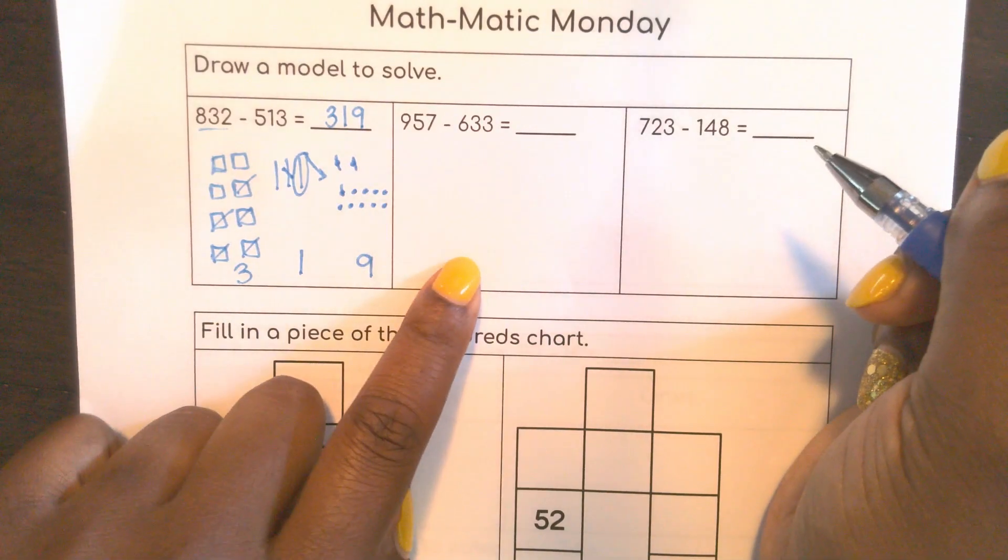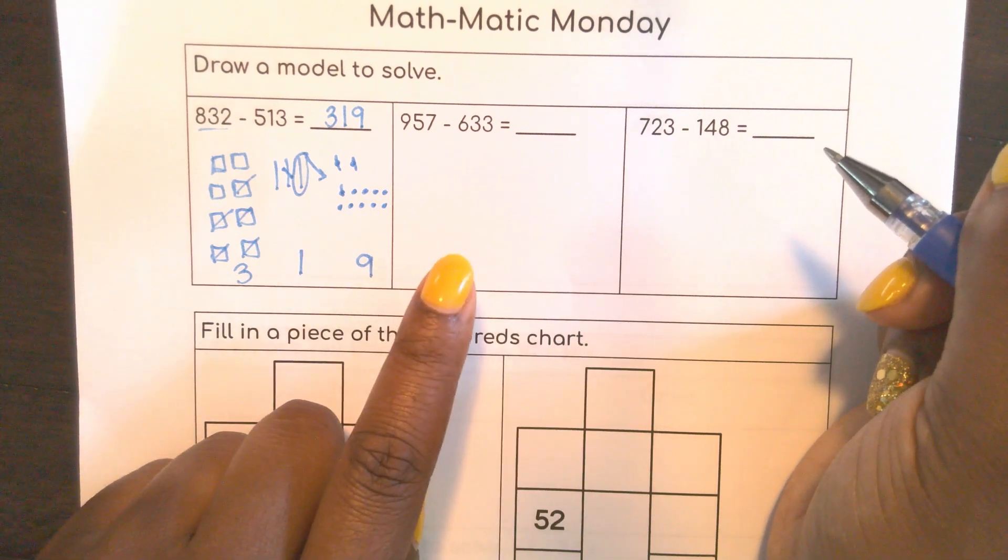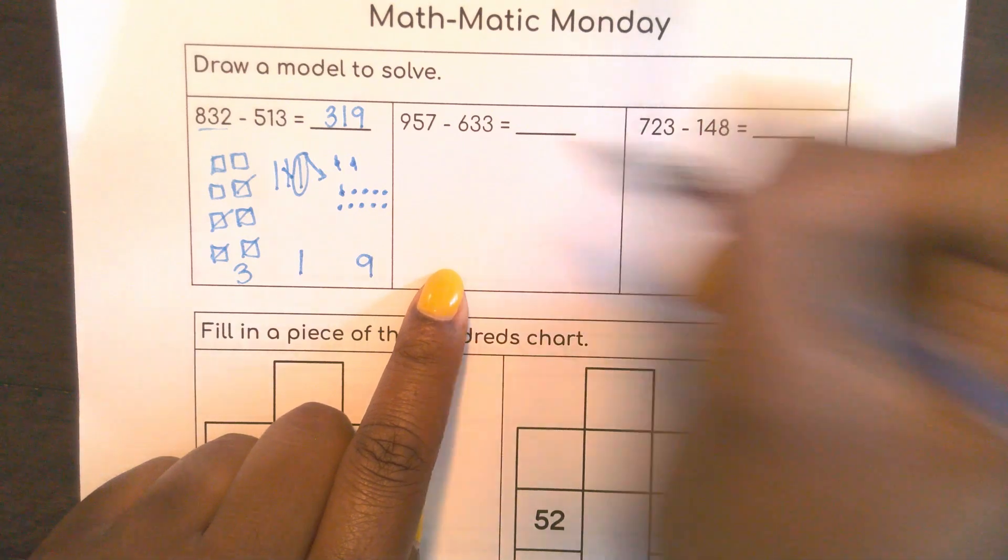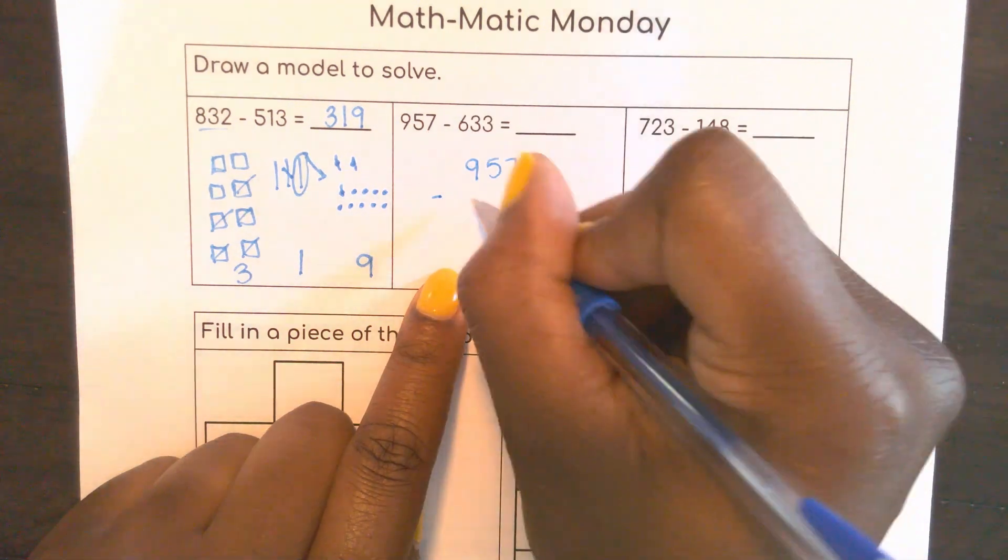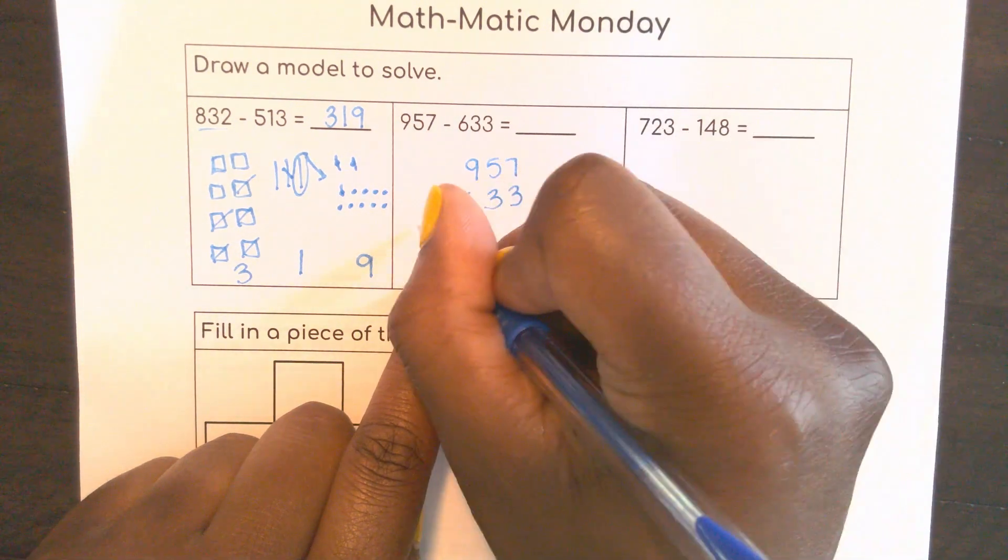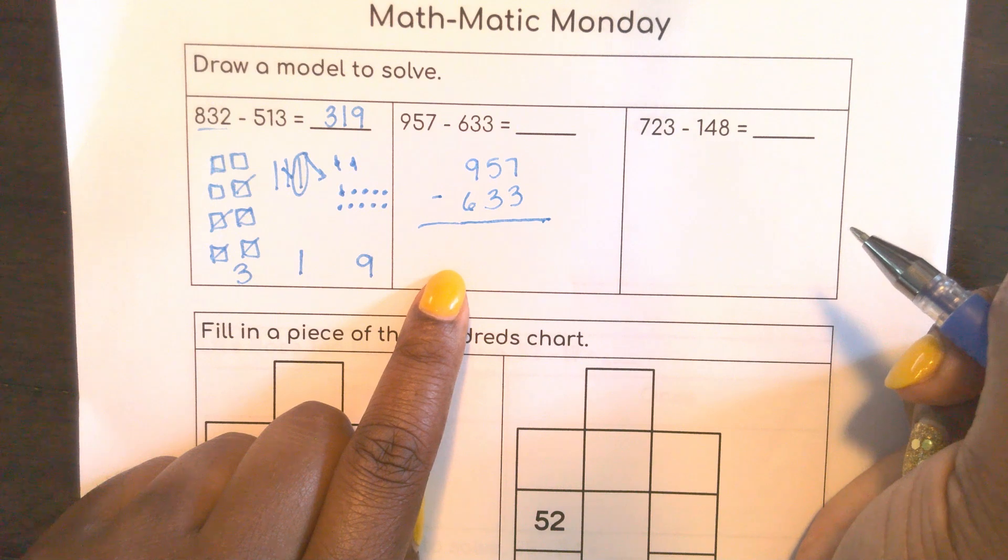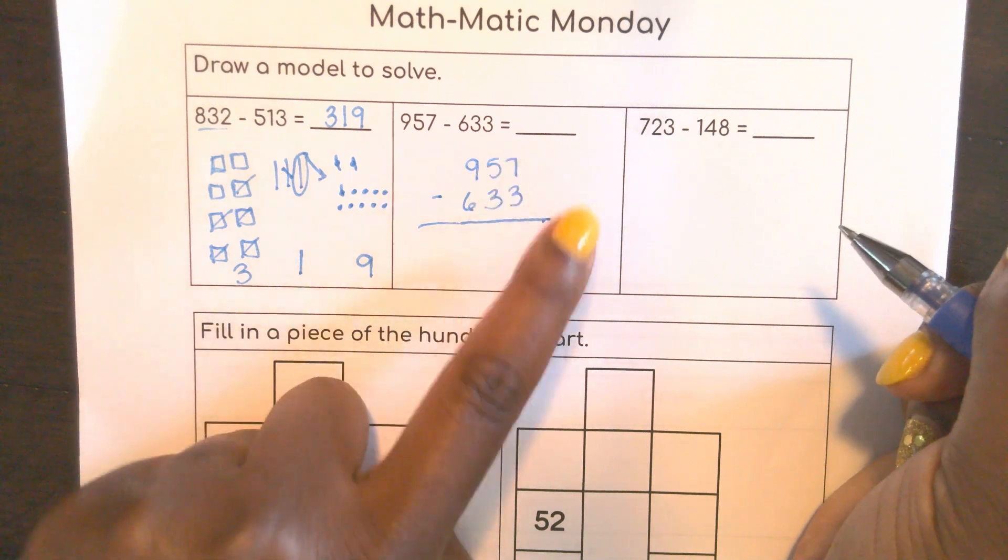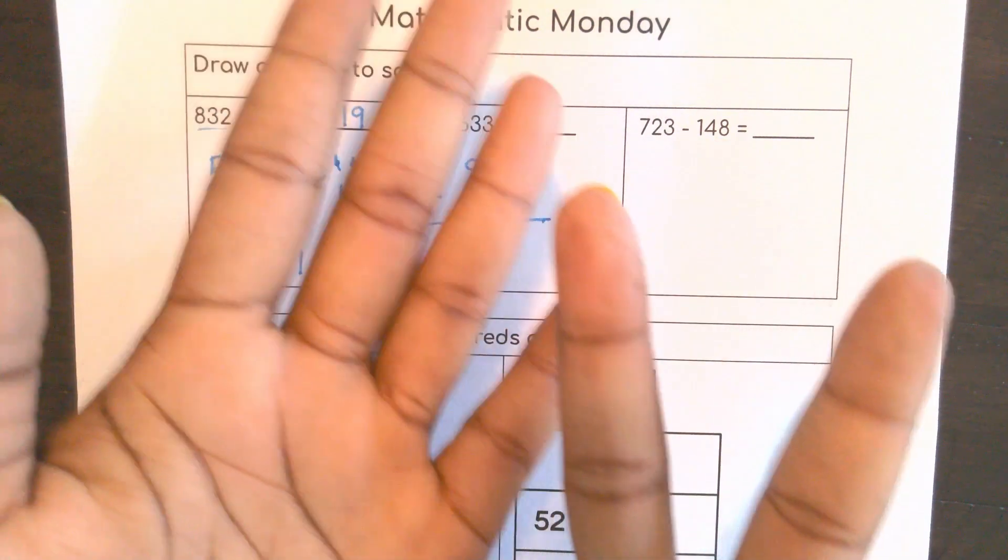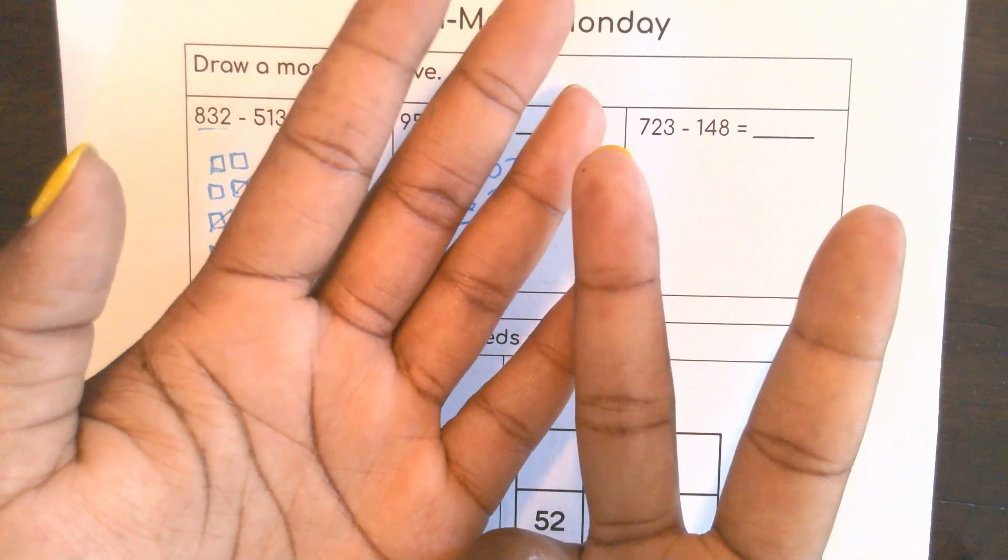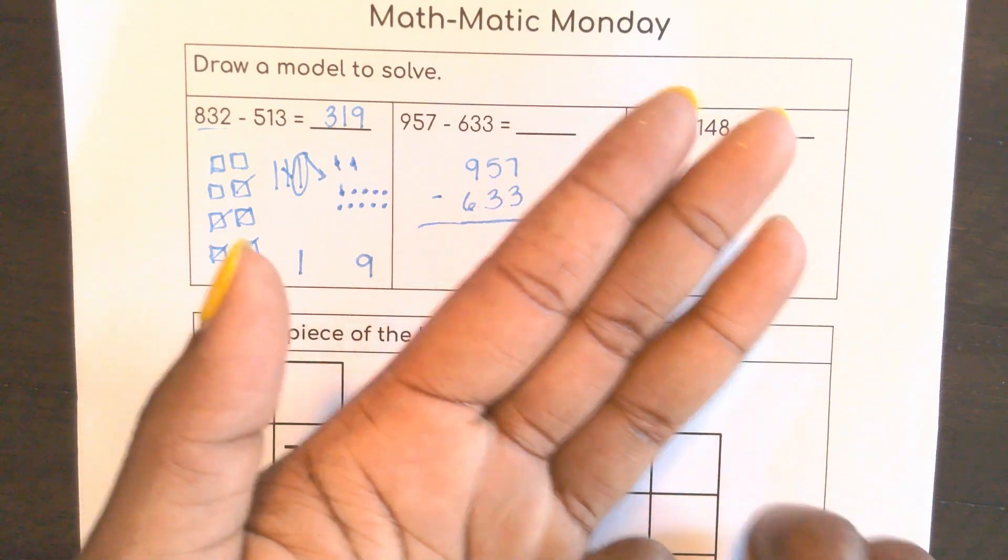Now I'm going to use standard form here. Remember I try to do a pattern for those who like standard form or want to be familiar with standard form, so I'll put 957 on top, my larger number on top, and 633 on the bottom. So this is set up pretty nicely because seven minus three, I can actually do that. If I have seven and I want to take away three, I can just take away one, two, three, and I have four left.